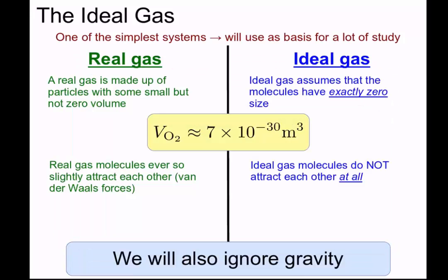However if you think about an oxygen molecule its volume is 10 to the negative 30 meters cubed which is very very small compared to the room you're in. So the approximation that a gas has zero size for its particles is not actually that bad.